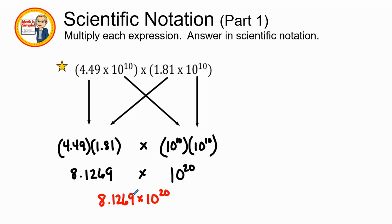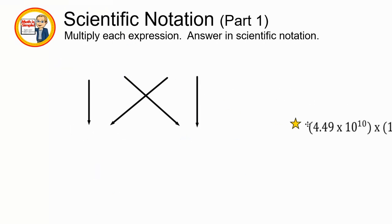And so our final answer in scientific notation is 8.1269 times 10 to the 20th power. We notice that this problem, we don't have to move our decimals because it falls in between 1 and 10. It's greater than 1 and less than 10. Let's go ahead and try another one. Let's go ahead and get rid of this example.